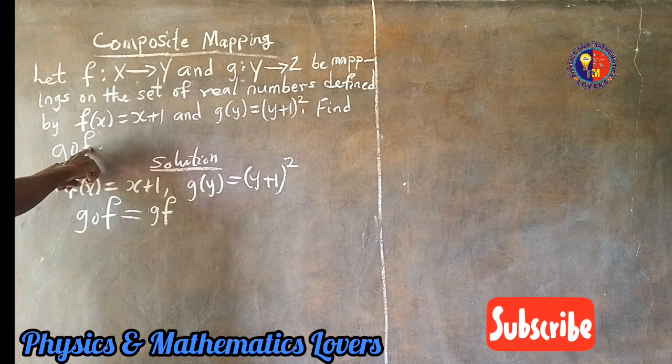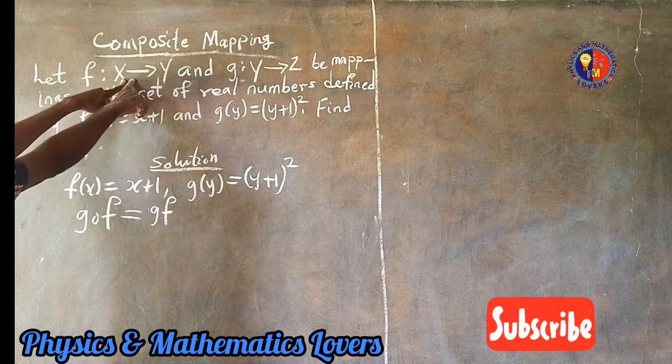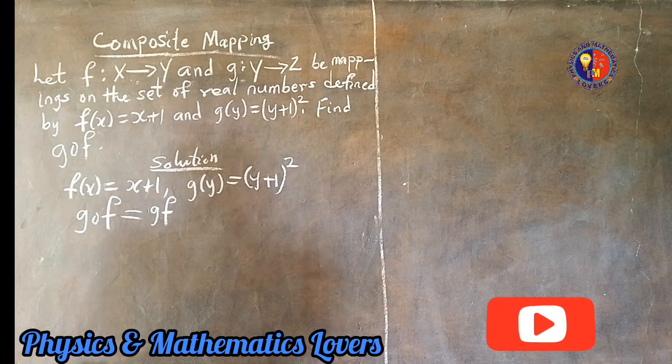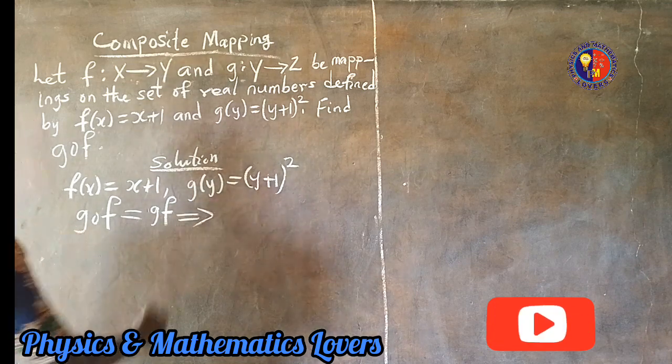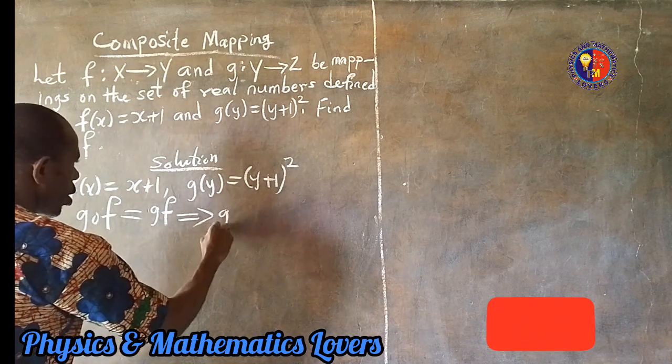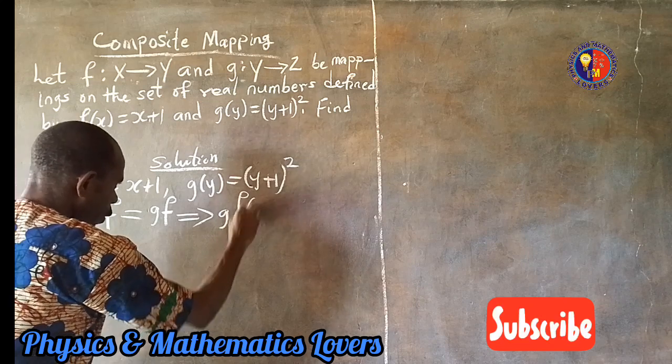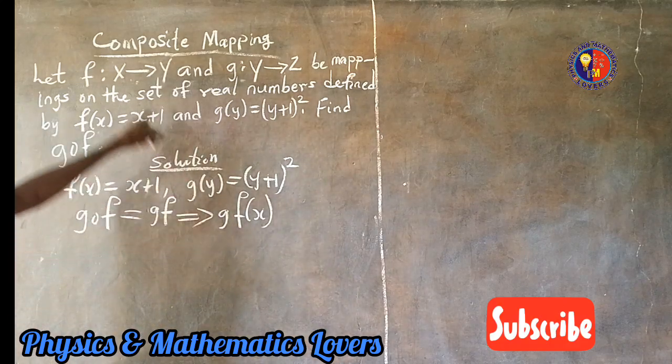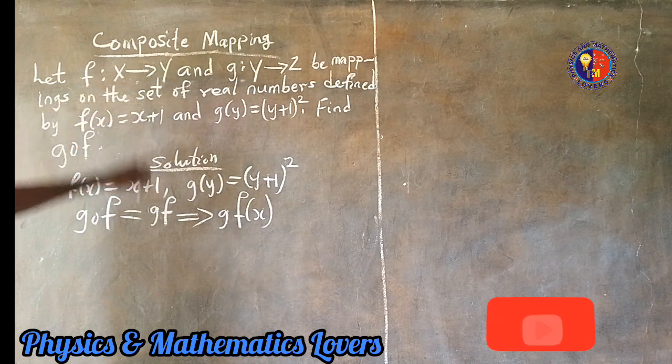So which means, this will now imply that we have gf(x). Alright, so since f is defined on the set of real numbers in this word mapping, so we feel that what?